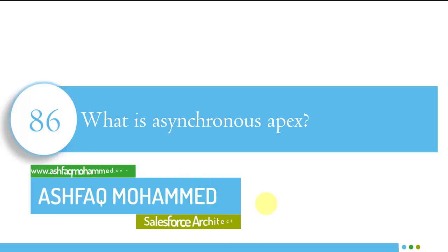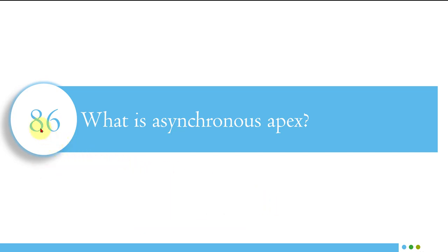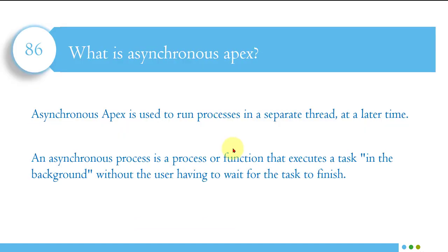So the very first question in this video is: what is asynchronous apex? Asynchronous apex is used to run a process in a separate thread at a later time. It is a process or function that executes a task in the background without the user having to wait for the task to finish. Normally, when you write a normal method, as soon as you click a save button connected to that method, it executes immediately and you get the result right away.